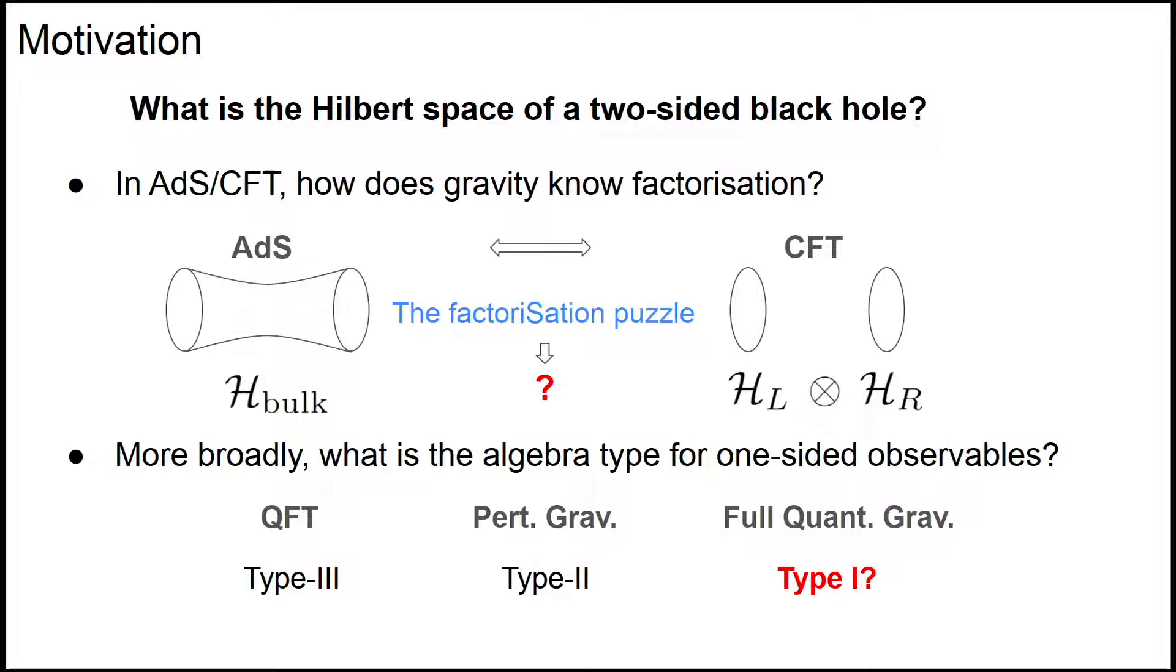More generally, we can talk about algebra type classification. We can think about what's the type of algebra for one set of the observables. We know that if you have different types of corrections, we have different types of algebra. Now suppose we have a full quantum gravity theory, then what should be the algebra type?